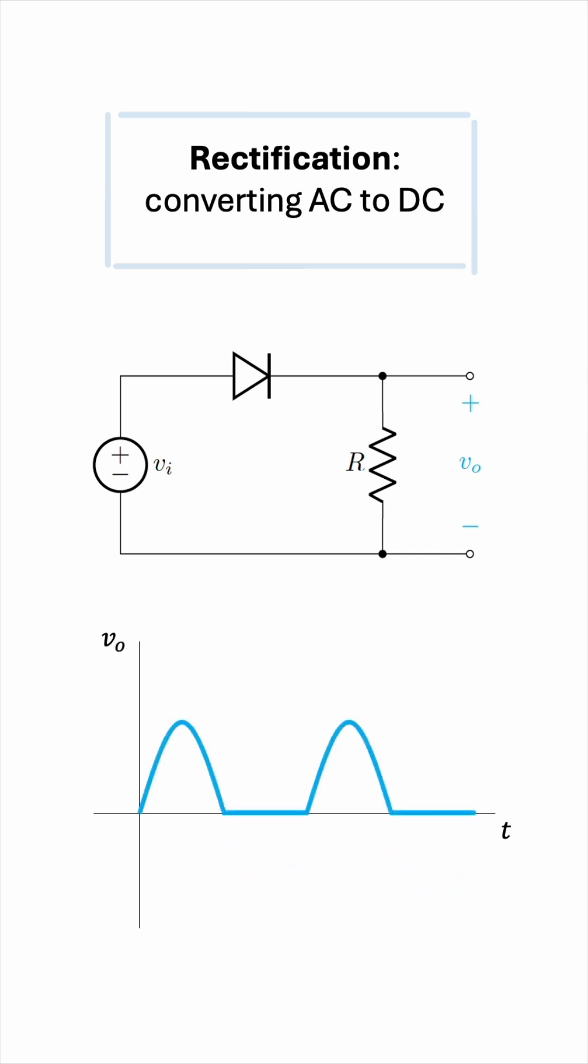We can see that a bipolar input is now a unipolar output, an output with a single direction. The diode successfully converted an AC input into a DC output, and this is just one of many applications that the diode plays a fundamental role in.